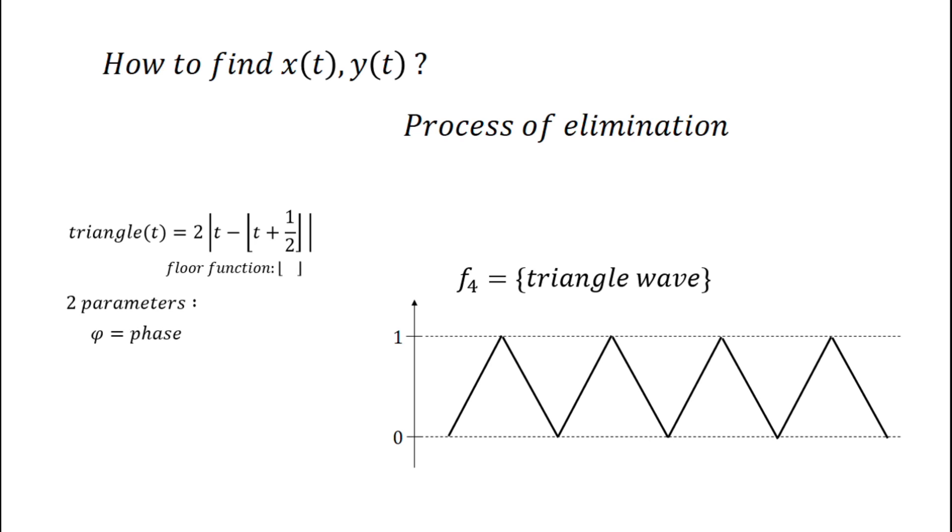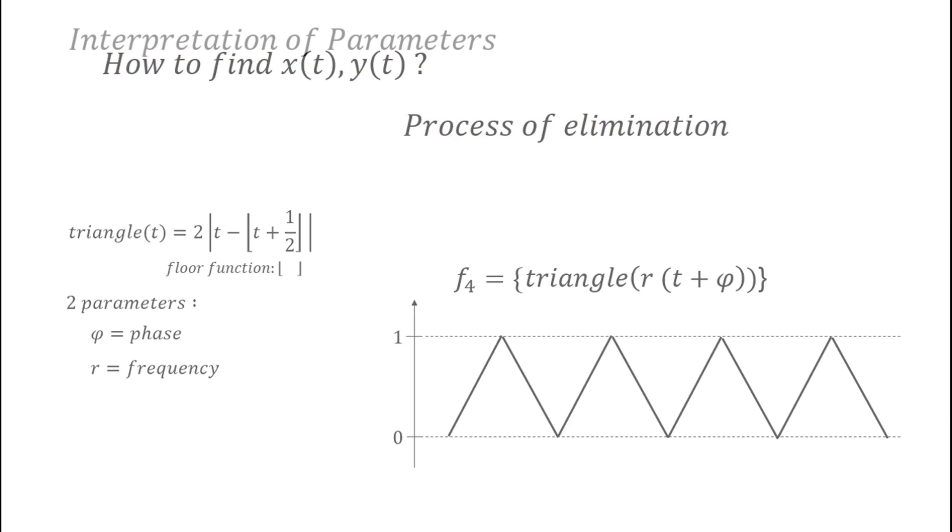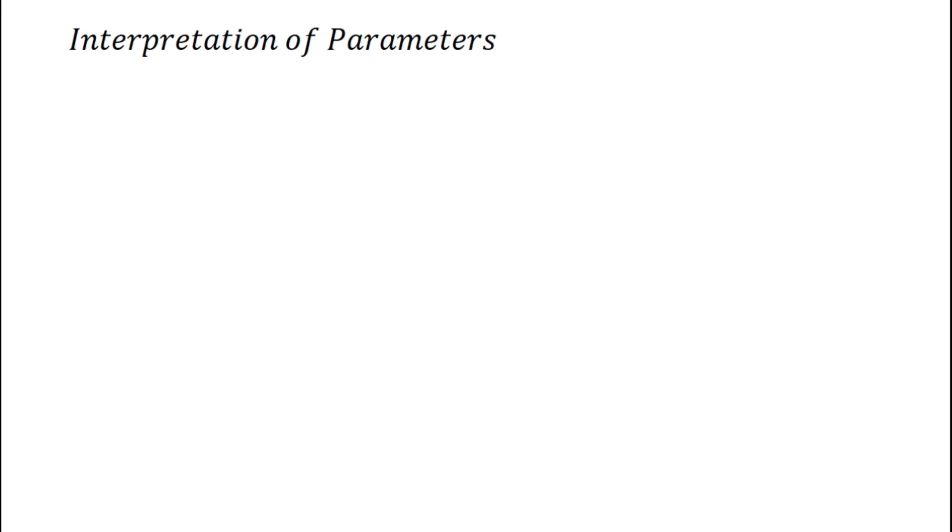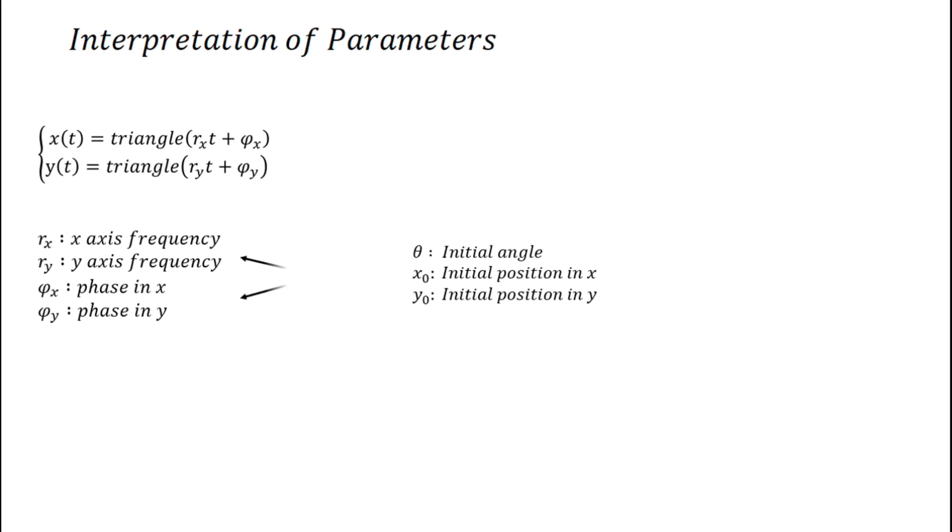So the function can have many other values, like the phase - the distance between the function and the origin - and the frequency, since it is an oscillating function. So now that we've found our best candidate for our target function x and y, we need to find the link between the triangle wave parameters and the billiard parameters.